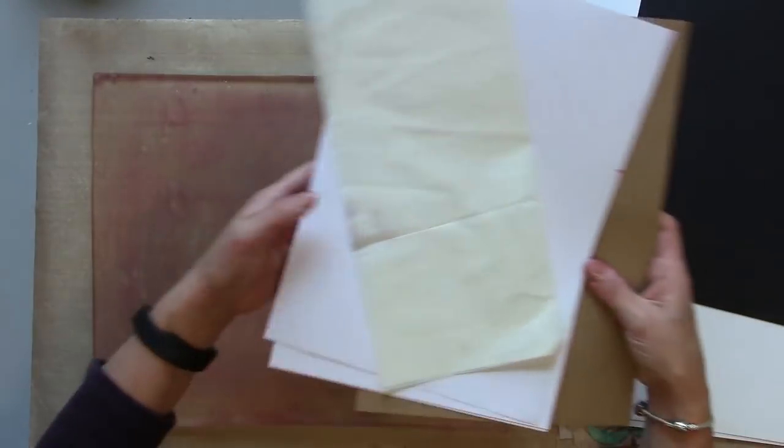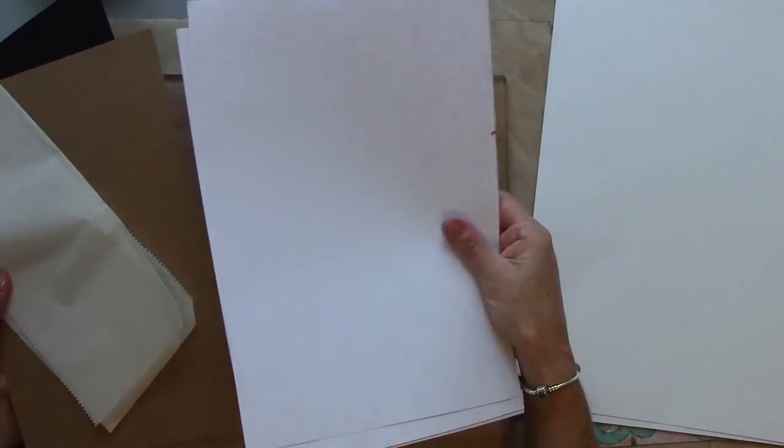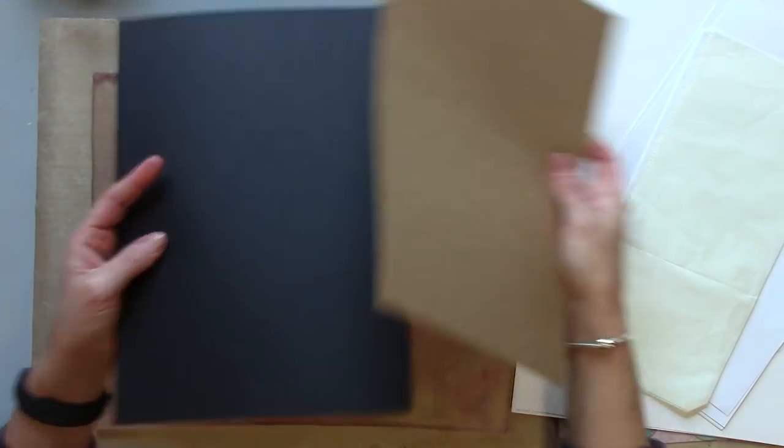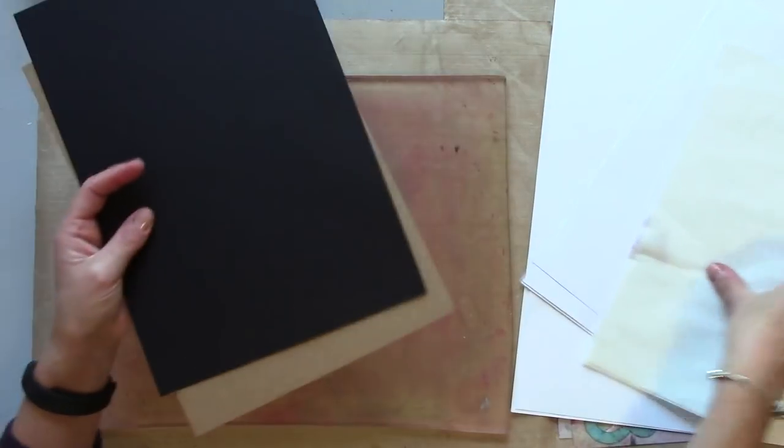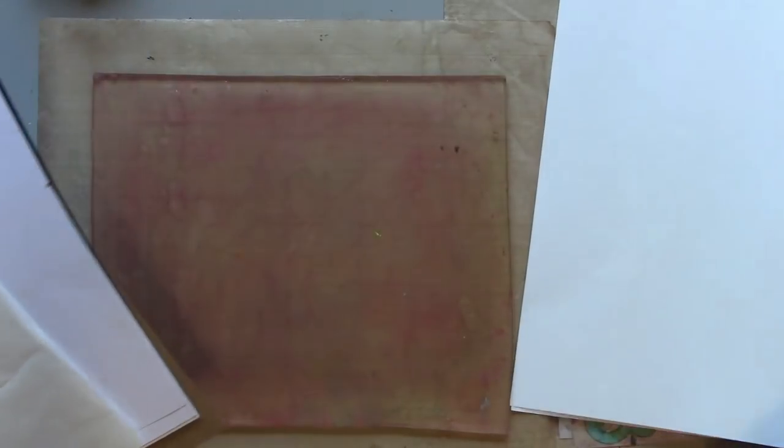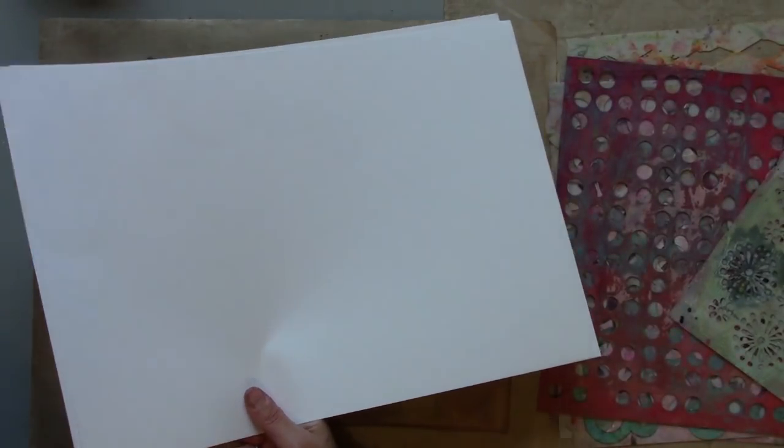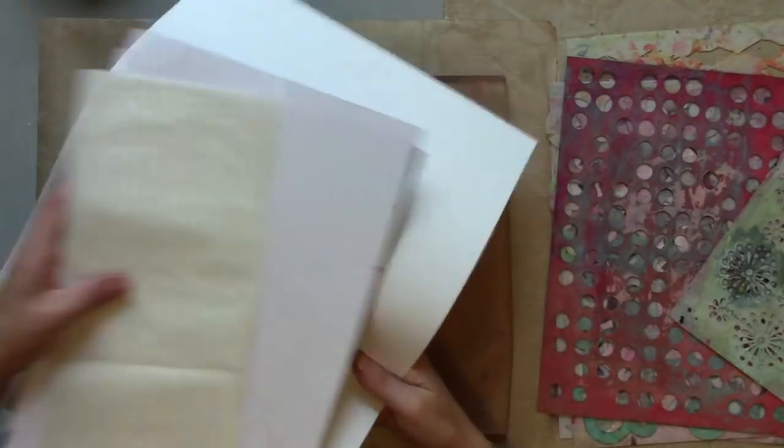So gather up some supplies. I'm going to be using some smooth white card, deli paper. I might even try it on some craft and some black, just to see what I get. And then I've got some large pieces of cartridge paper, that's for cleaning off stencils and things. All those bits are going to be useful.